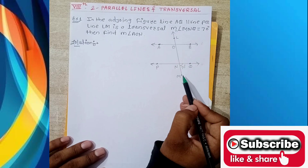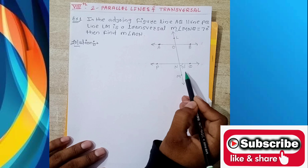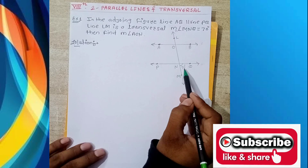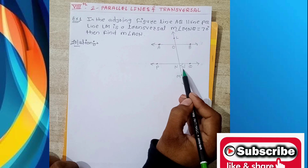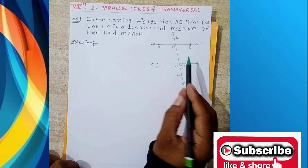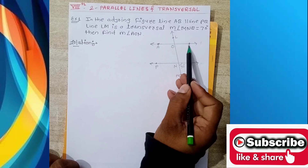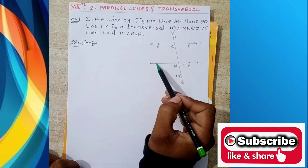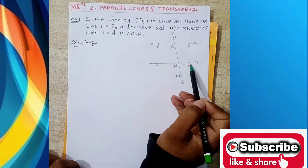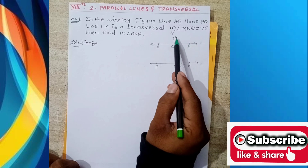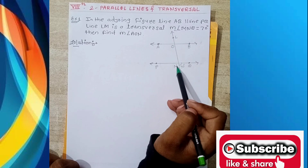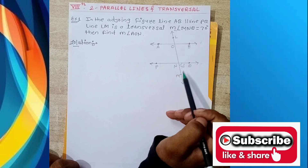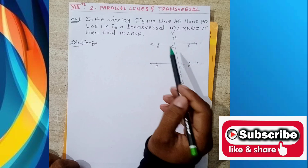Find the measure of angle AON. So, measure of angle YMQ equals 70 degrees, and line AB is parallel to line PQ. Both are parallel lines and their transversal is LM.